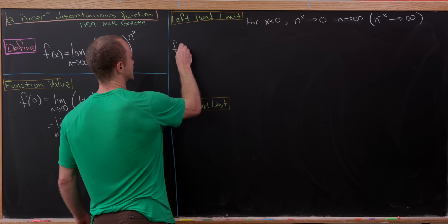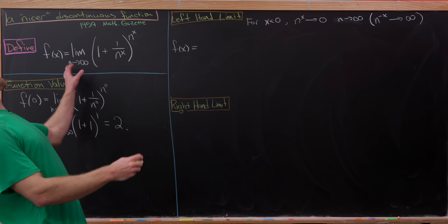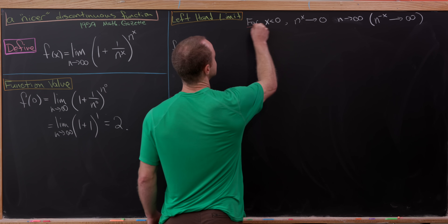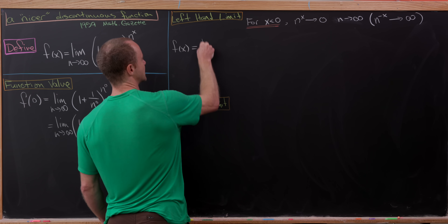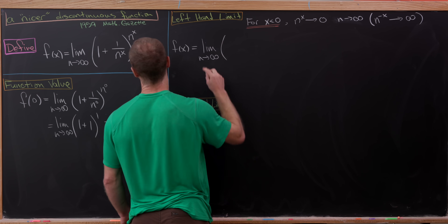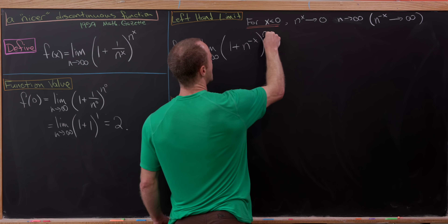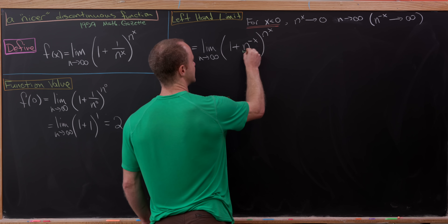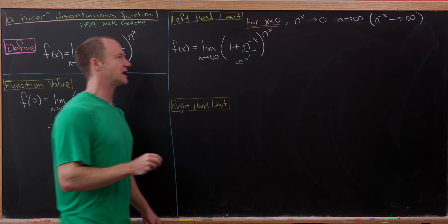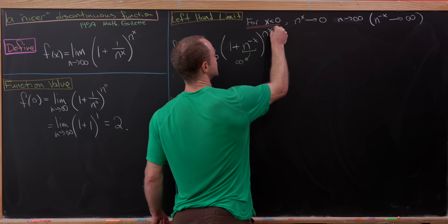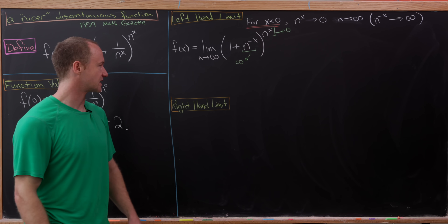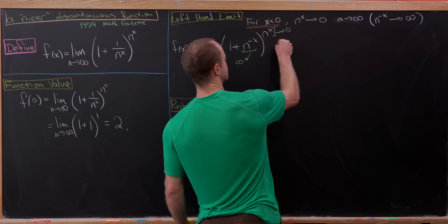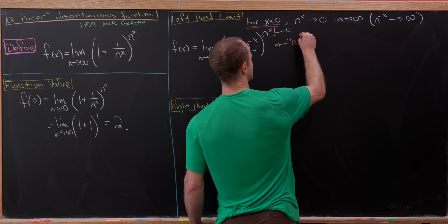Now let's look at our function in the setting where x is less than 0. So f of x equals the limit as n goes to infinity of 1 plus n to the minus x, all raised to the n to the x. The base is charging off toward infinity, whereas the exponent is approaching 0. That makes this an indeterminate form of type infinity to the 0 — one of these exponential indeterminate forms.